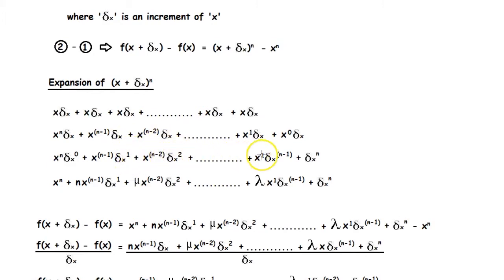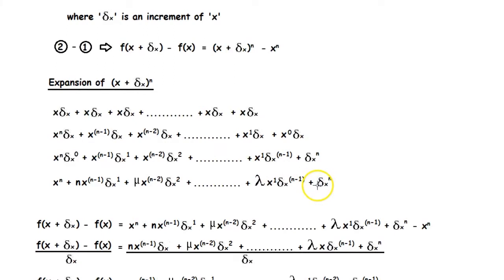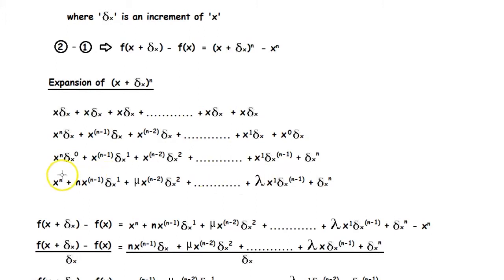It keeps on increasing until the last term has delta x to the power n. Now that we have the powers of both x and delta x, we need to find the coefficients. The first term's coefficient will always be 1, and the last term will also have 1 as the coefficient. The next term will have n as the coefficient. For the other coefficients, since we are going with a simpler version, we can label them as constants — nu, lambda, or any other character. So this is the final expansion of x plus delta x whole thing to the power n.